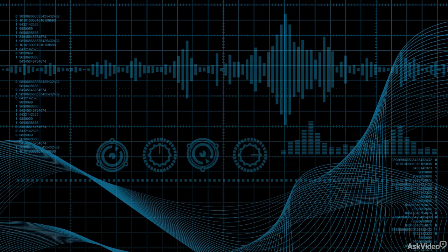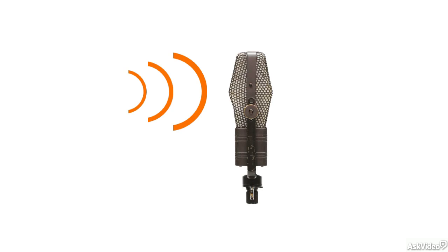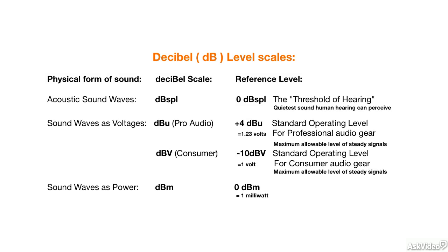Once a sound wave in the air is picked up by a microphone, the air pressure variations are converted to analog voltage variations. These can range from a few millivolts up to several volts, and these levels are also expressed in decibels. But here, things are a little less clear-cut. There's more than one reference in use when expressing the level of electrical analog audio waves, and this can sometimes cause a little confusion.